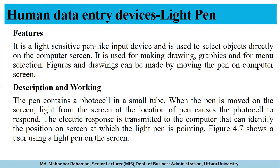A light pen is a light-sensitive input device used to select objects directly on the computer screen. It is used for making drawings, graphics, and menu selections. The pen contains a photocell in a small tube. When the pen is moved on the screen, light from the screen causes the photocell to respond, and this electronic response is transmitted to the computer, which identifies the position on the screen where the light pen is pointing.